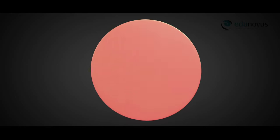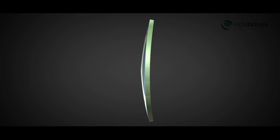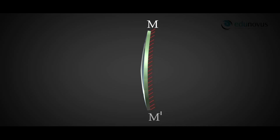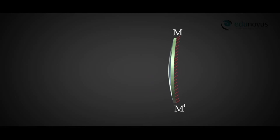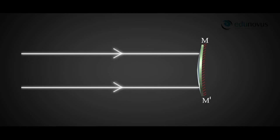Consider a convex mirror. This is the reflecting surface, and on the other side is the non-reflecting surface. The curved line mm', which is the diameter of the circular rim of the mirror, is called the aperture — the part of the mirror through which light rays enter. The centre of the spherical surface of the mirror is called the pole of the mirror, denoted by P.